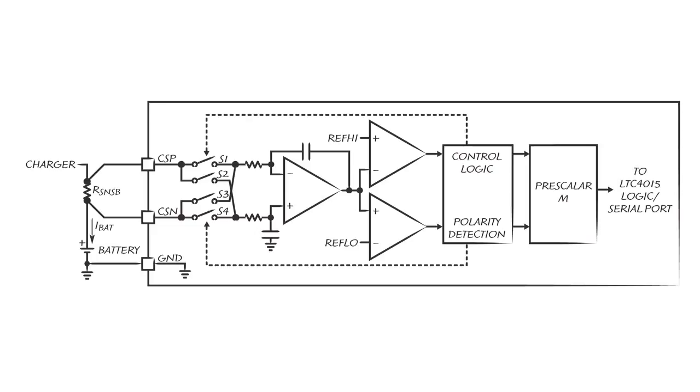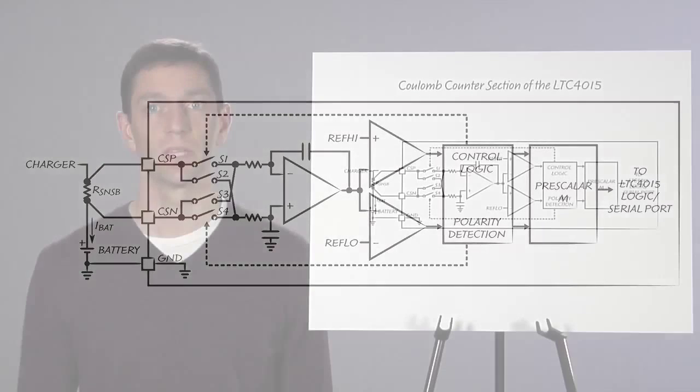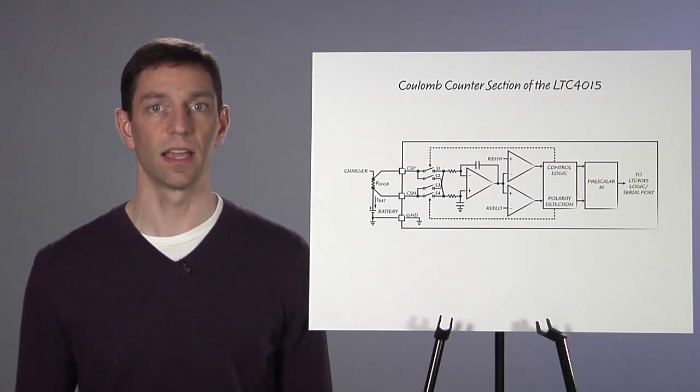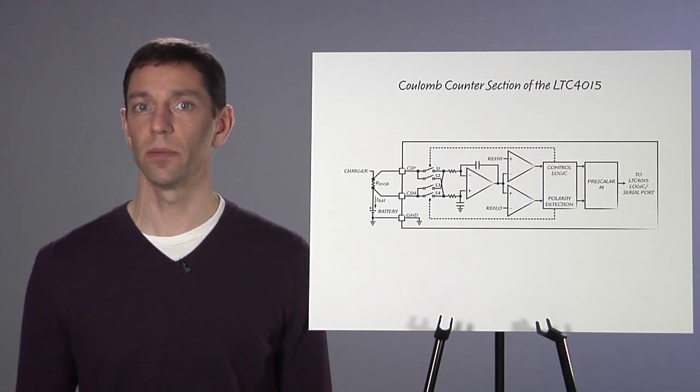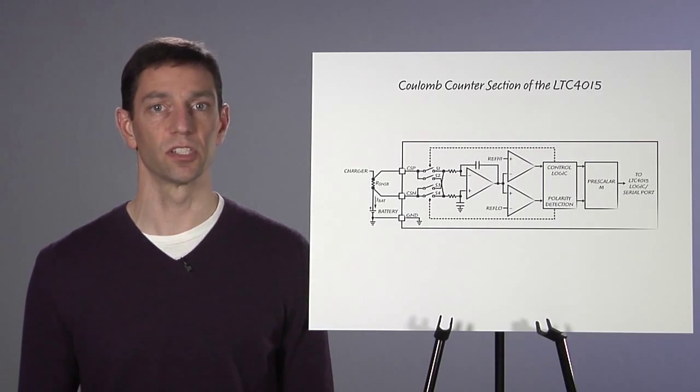Because an independent continuous time precision integrator is used for the Coulomb counter, it never misses dynamic battery current signals and provides exceptional precision over a wide dynamic range. An adjustable pre-scaler allows matching of the 16-bit Coulomb counter value to the battery capacity of interest. The Coulomb counter functionality has built-in high and low limits which can be used by the alert system.